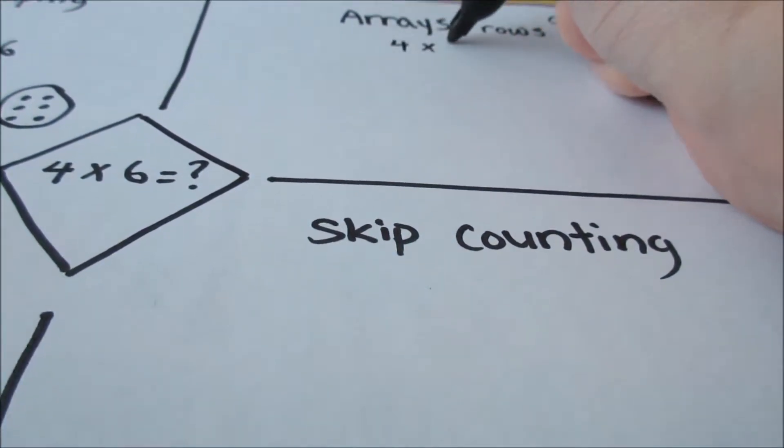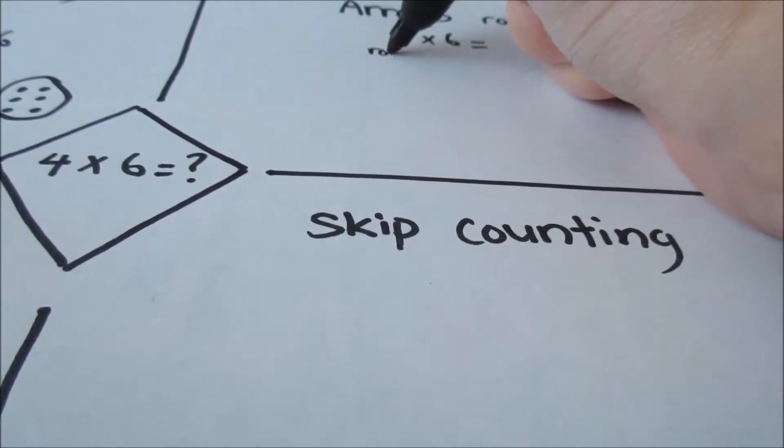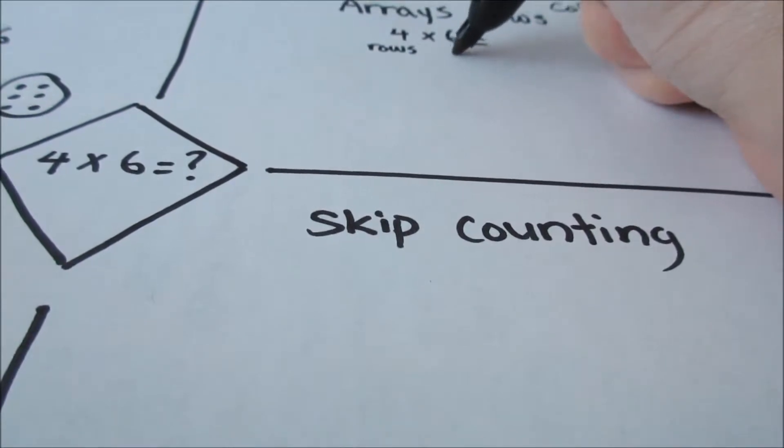For 4 times 6, we're going to think that we have 4 rows and 6 columns.